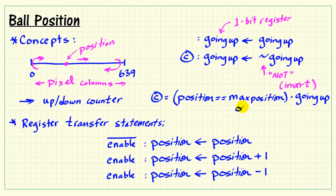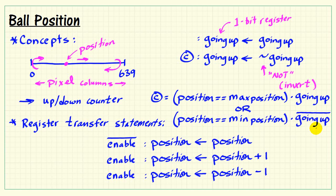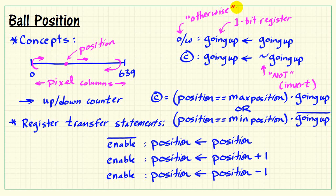The other case that causes us to flip the direction is if we are hitting the lower limit — that is, position is identically equal to min position and we were going down, which is the opposite of going up. Either of these two conditions is sufficient to switch the direction. Otherwise, we simply keep the same value.